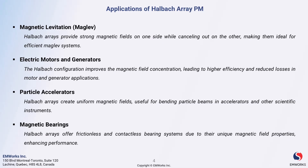Next, we have electric motors and generators. The halbach configuration significantly improves magnetic field concentration, which translates to higher efficiency and reduced losses in these applications. By optimizing the magnetic field, we can achieve better performance and lower energy consumption.